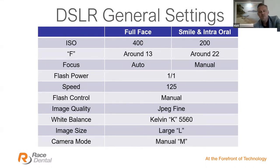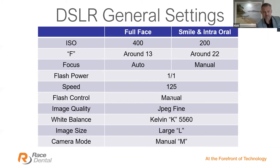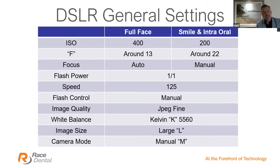For a full face shot, start around ISO 400; for an intraoral shot, around ISO 200. The f-stop around 13 works for a full face — for the Nikon, the Canon is a little different — and around f/22 for an intraoral photo. For focus: full face I prefer auto, but intraoral I run manual. Flash: one-to-one, speed 125, flash control manual. Image quality: JPEG — this is really important. Please set your cameras to JPEG so when you send the photo we can read it straight away, rather than needing to import raw files into separate software.